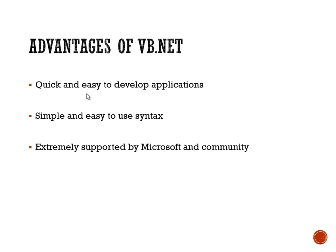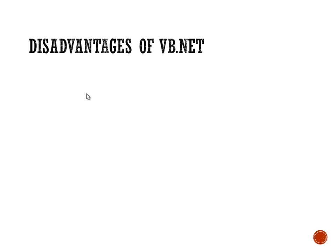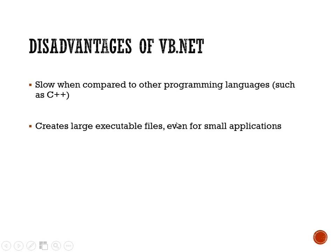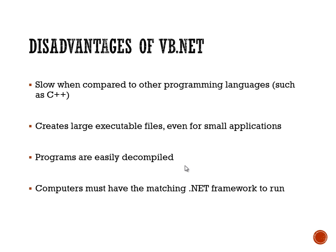Now for the disadvantages. One highly contested point is that VB is slow compared to other programming languages such as C++ — though that's not really the point of using VB.NET. The next issue is it creates pretty large executable files even for a tiny program. Also, your programs can easily be decompiled — meaning someone can take your executable file and turn it back into source code to see how you made your program.